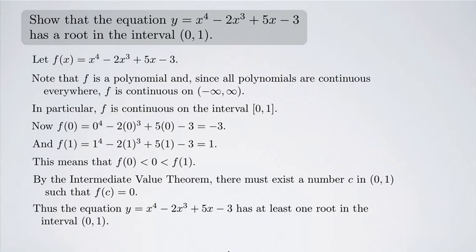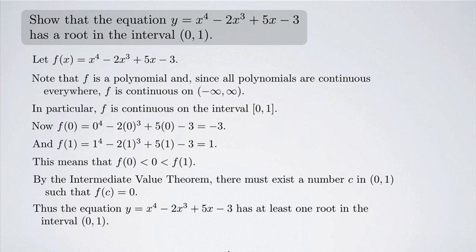When writing a proof like this, you always want to use complete sentences. Also, note that we've shown that the equation has at least one root in the interval — there may be more than one. It turns out in this case there is only one root on that interval, but the Intermediate Value Theorem can only tell you that there exists a root, not how many there are.